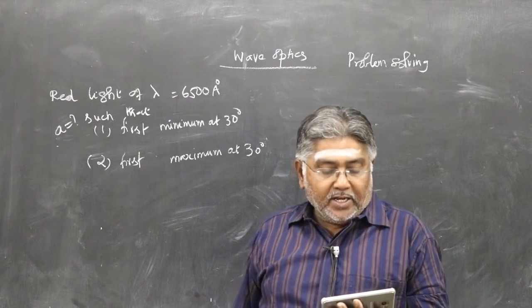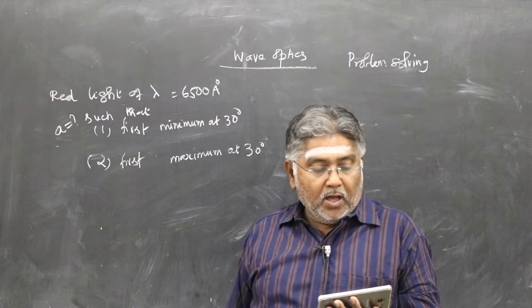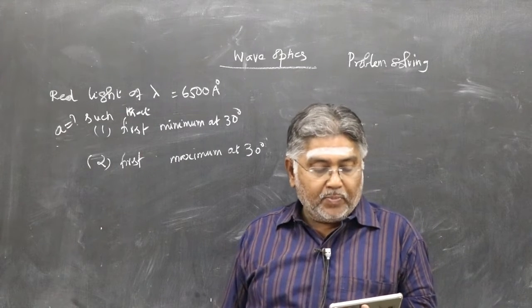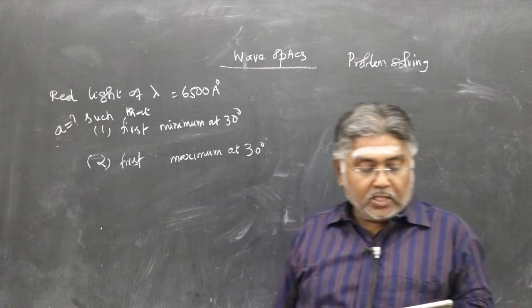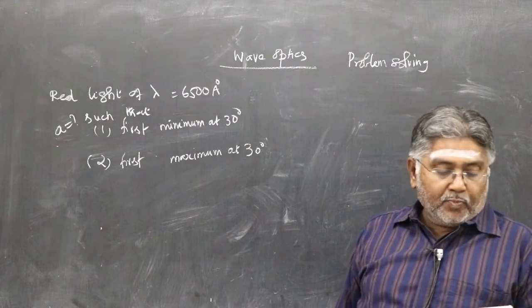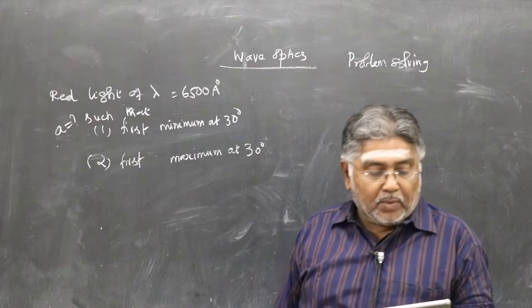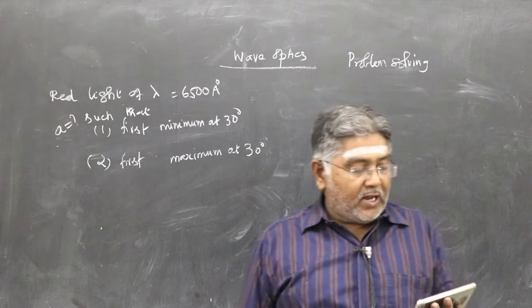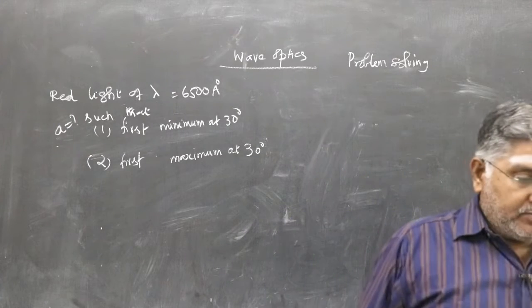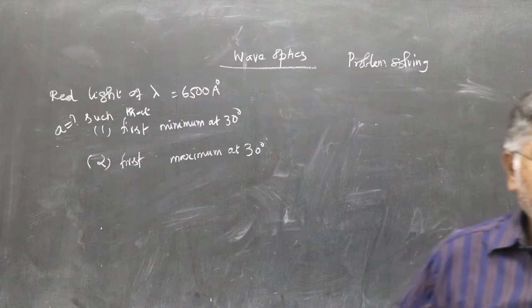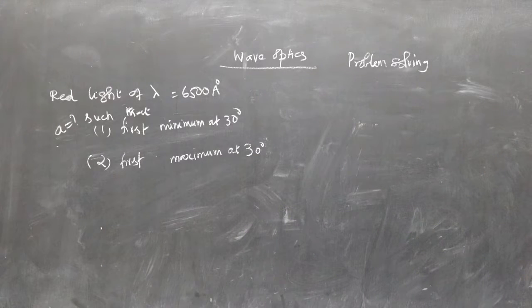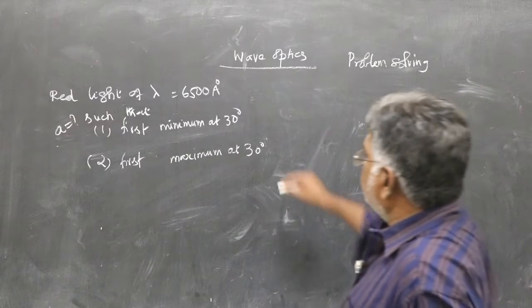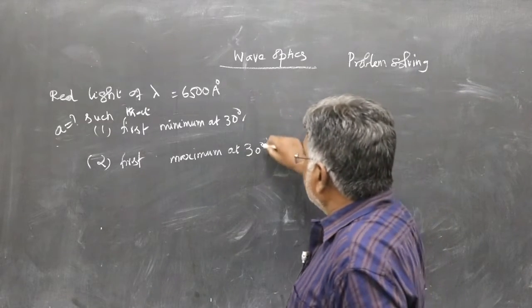Reading it once again: subdivision 1 — the first minimum falls at an angle of diffraction of 30 degrees, and subdivision 2 — the first maximum falls at an angle of diffraction of 30 degrees. So theta is given in both cases.